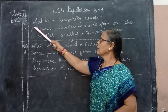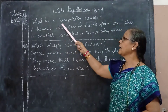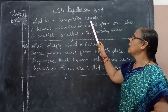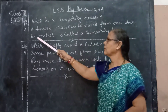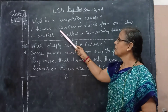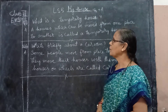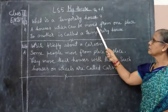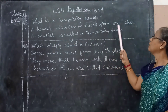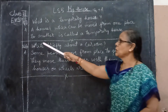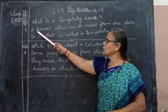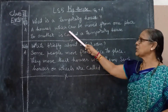Now we will read along with the spelling. W-H-A-T: what. I-S: is. T-E-M-P-O-R-A-R-Y: temporary. H-O-U-S-E: house. A house. H-O-U-S-E-S: houses which can be moved from one place to another is called a temporary H-O-U-S-E: house.